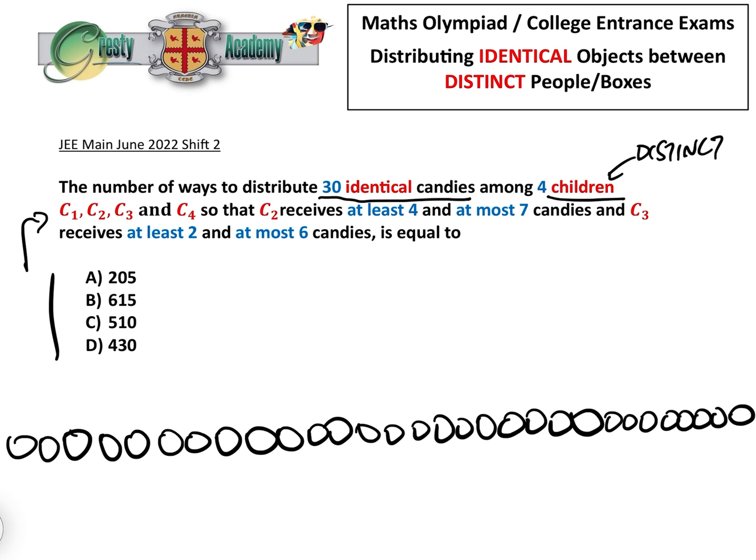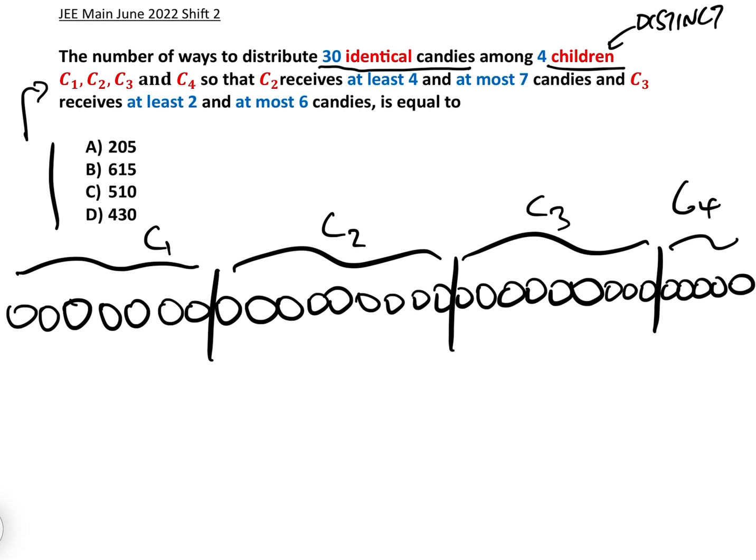Here are the 30 identical candies and I'm just going to redo the method that we're going to use which is called stars and bars. Let's imagine there were no constraints and we just wanted to distribute 30 identical candies between four children. What we do is we take three bars and we plonk them anywhere. That is the number that C1 gets, that's the number C2 gets, that's the number C3 gets and that's the number C4 gets. Basically the number of that is the permutations of 33 objects which is 30 identical objects.